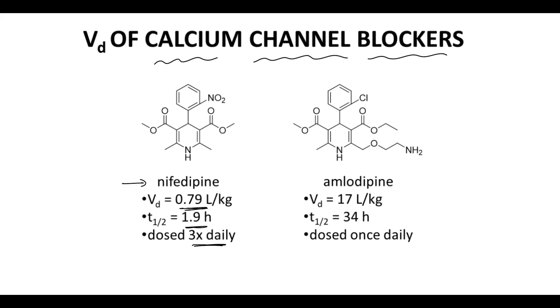Now if we look on the right, here is amlodipine. Amlodipine has almost the exact same structure except for the addition of this chain, and the key functional group is this amine. This amine will be protonated at biological pH. With the positive charge, VD increases dramatically from 0.79 L per kg to 17 L per kg. Also, half-life increases as well. Amlodipine has a much longer half-life and therefore is easily dosed once per day.